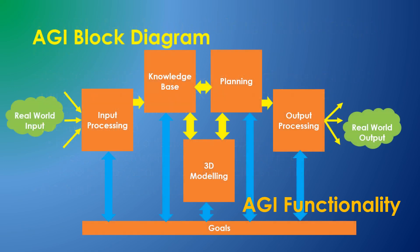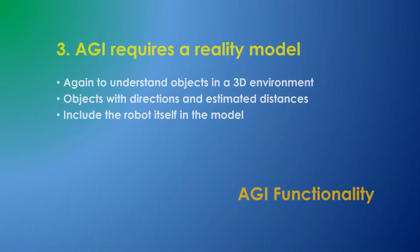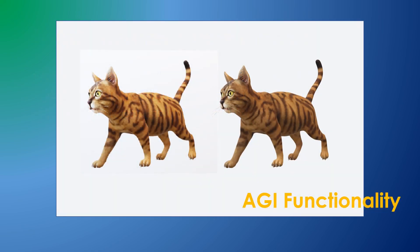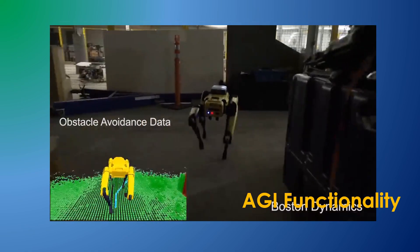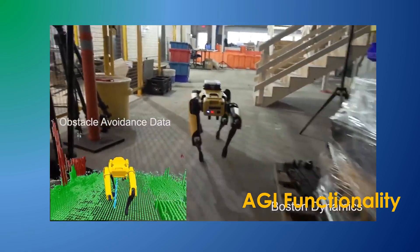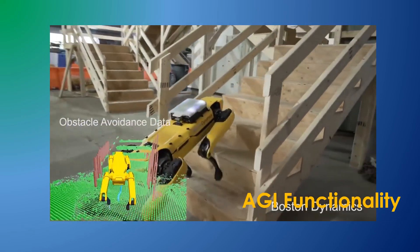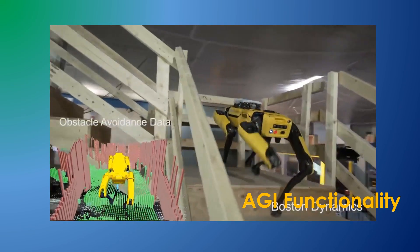Number three: AGI needs a reality model. We understand things in part because we can model our reality in our minds. This lets us comprehend things as existing in an environment with spatial relationships to other things, so we know the difference between a thing and a picture of a thing. Today's mobile robots do this in a limited way. Generalizing on this concept to create an internal model which can incorporate arbitrary learned objects with any number of attributes is one key to AGI.